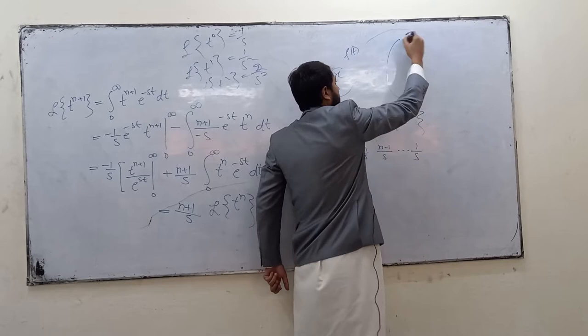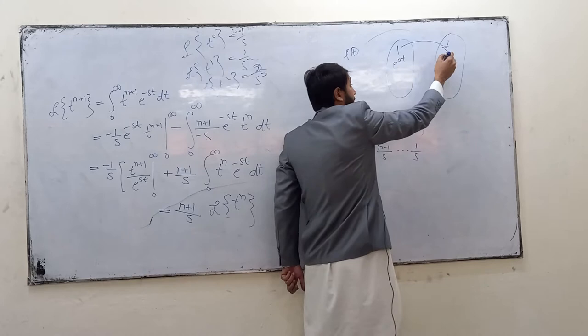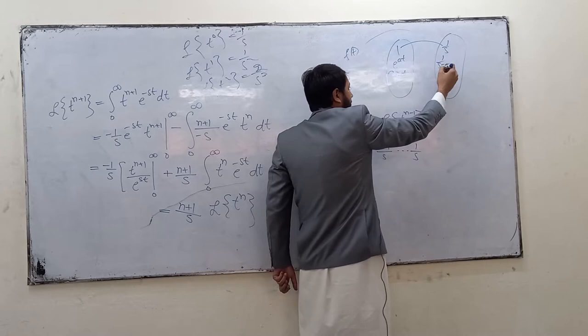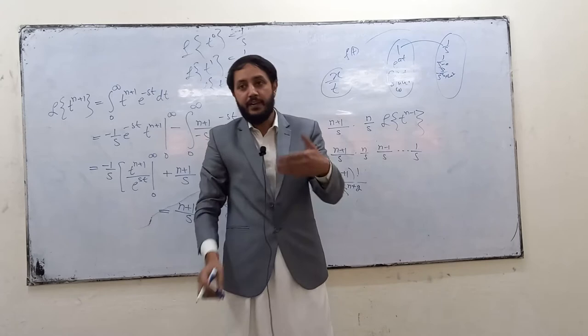Now you know the Laplace transform of 1, it is 1 over s. You know the Laplace transform of e^(at), exponential functions, this family, this is 1 over (s - a). You know these basic things. You know the Laplace transform of cos(ωt) is s over (s² + ω²), something like that. But similarly, sine(ωt) and cos hyperbolic.